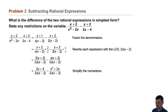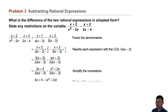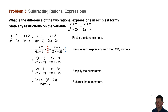And now we'll subtract the numerators. We have a common denominator, so after subtracting the numerators, we write the new numerator over the common denominator, and we arrive at 2x plus 4 minus the quantity x squared plus 2x, over 2x times x minus 2.